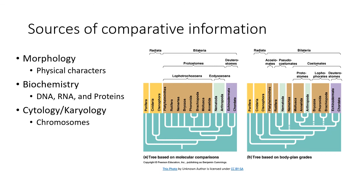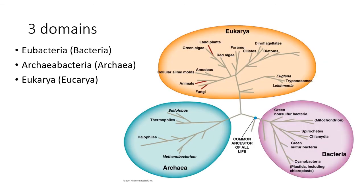There are three major domains of all life: Eukarya, Archaea, and Bacteria. Animals are part of Eukarya, and we can see the relationships of plants, animals, and fungi in a branching tree. Within animals, there are many phyla that we will study by their evolutionary relationships.